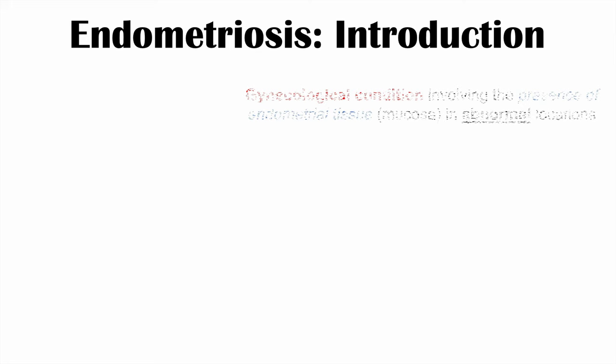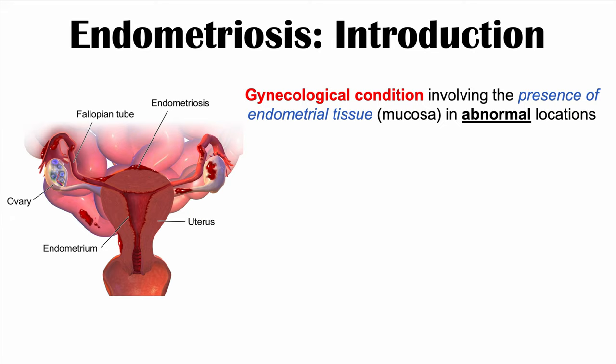So what is endometriosis? Endometriosis is a gynecological condition involving the presence of endometrial tissue or endometrial mucosal cells in abnormal locations. What this really means is that this endometrial tissue is outside of the uterus — it should be in the uterus, in the endometrium, but it's in other areas where it should not be.